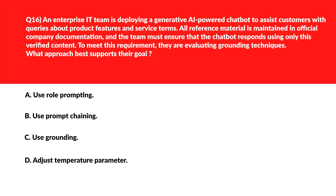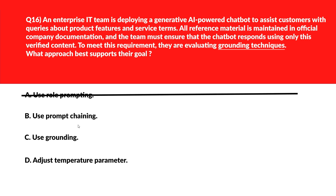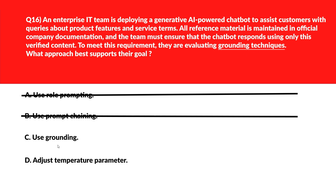Now this looks interesting. Option A says use role prompting. Using role prompting defines the assistant's behavior by assigning it a specific functional identity — so this is wrong. We'll move to B. B says use prompt chaining. Using prompt chaining sequences multiple prompts to guide the assistant through a structured response flow — so this is again out. Option C says use grounding. Using grounding anchors the assistant's output to a trusted source of information — that is what we are looking for, we'll keep it. Option D says adjust temperature parameter. Adjusting the temperature parameter modifies the randomness level in the assistant's response generation — so D is wrong. We'll lock option C as the right answer.